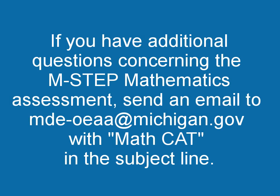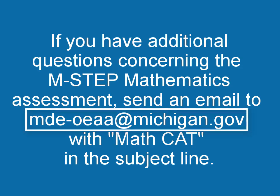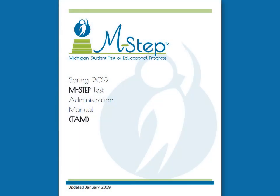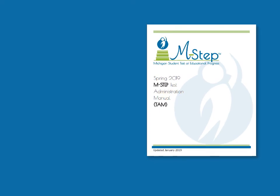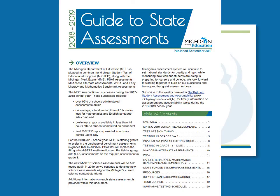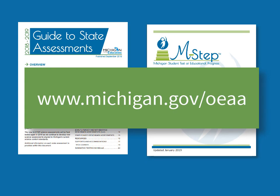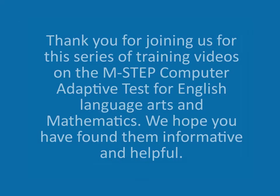If you have additional questions concerning the M-STEP Mathematics Assessment, send an email to mde-oeaa at michigan.gov with MathCat in the subject line. MDE staff will be sure to address your question in a timely manner. For more information about the M-STEP assessments, see the M-STEP Test Administration Manual. For more information about the other state summative assessments, see the Guide to Michigan State Assessments document. Both documents are available at www.michigan.gov. Thank you for joining us for this series of training videos on the M-STEP Computer Adaptive Test for English Language Arts and Mathematics. We hope you have found them informative and helpful.